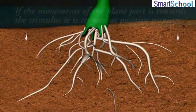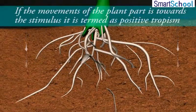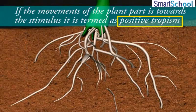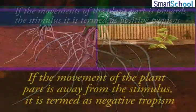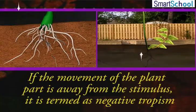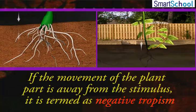If the movement of the plant's part is towards the stimulus, it is termed as positive tropism. If the movement of the plant's part is away from the stimulus, it is termed as negative tropism.